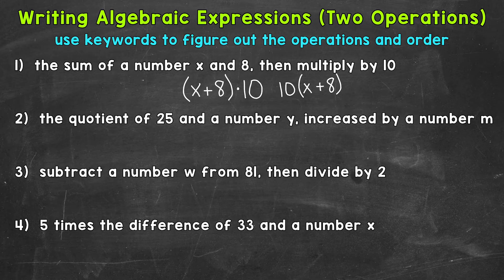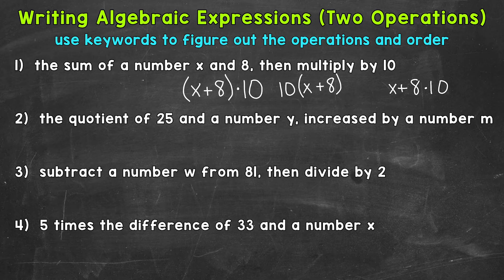There can be more than one correct answer for these algebraic expressions. One incorrect answer for number 1 would be x plus 8 times 10 without parentheses. This would be incorrect because of the order of operations — we would have to do multiplication first, so we'd do 8 times 10 and then add x. x plus 8 has to be within parentheses to show that's what we do first.